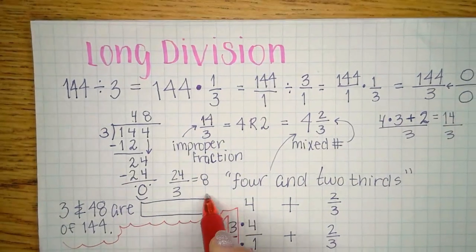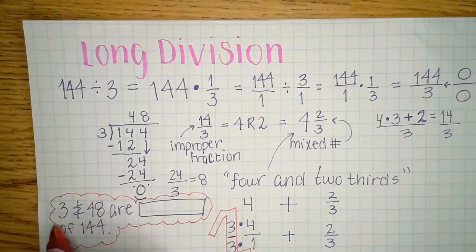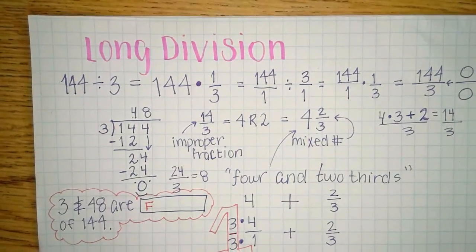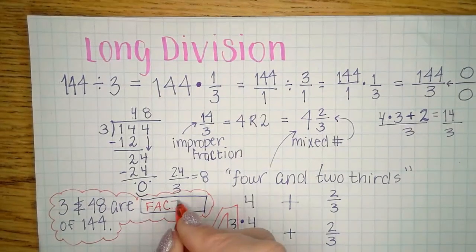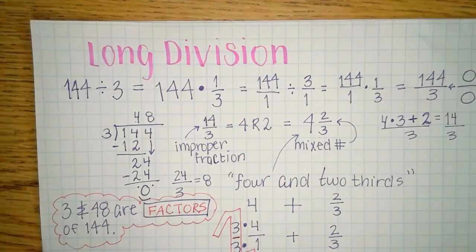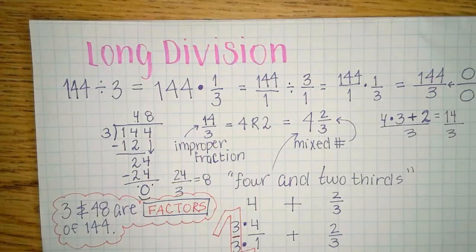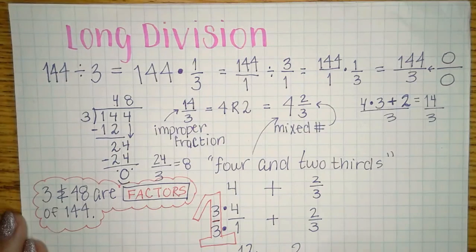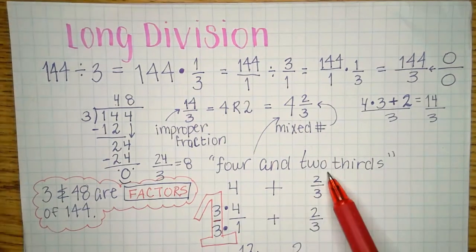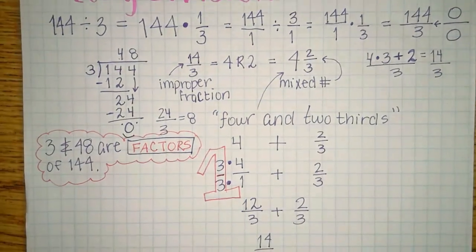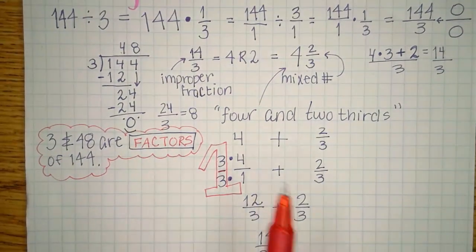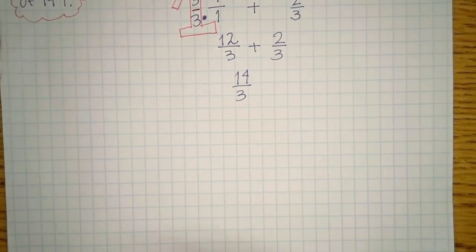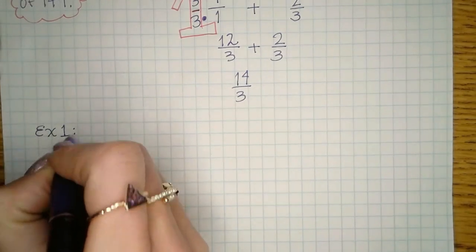When you divide and the number goes in evenly with no remainder, it's because they are factors. Three and 48 are factors of 144. I feel like you put this all in one category in your brain, and sometimes we forget the earlier stuff we learned — so that's why I reviewed this. Now I'm going to show you how to divide polynomials using the same reasoning.